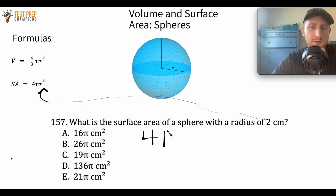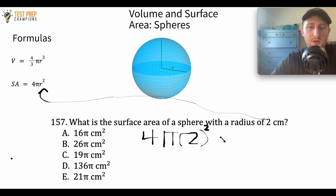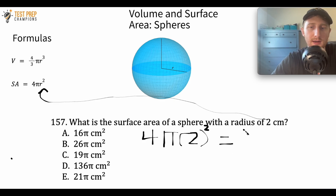We do 4 pi r squared, and since r is 2, we do 2 squared. If we calculate this, and noting that we don't have to use pi numerically because it's left in the answer choices, the answer is 16 pi. Hopefully this makes sense.